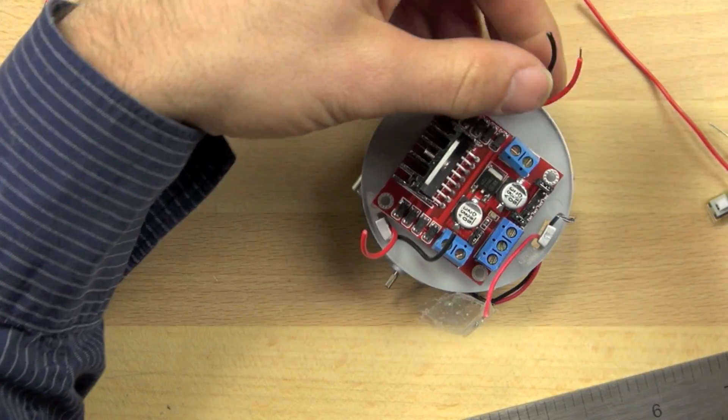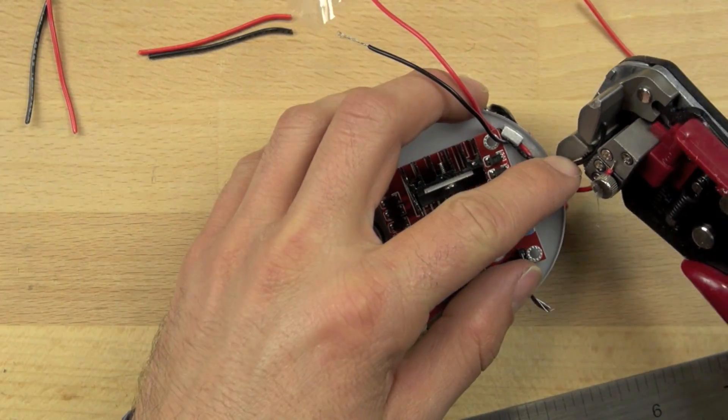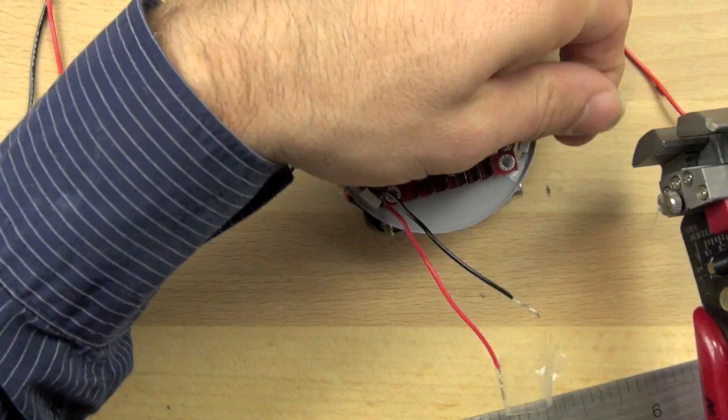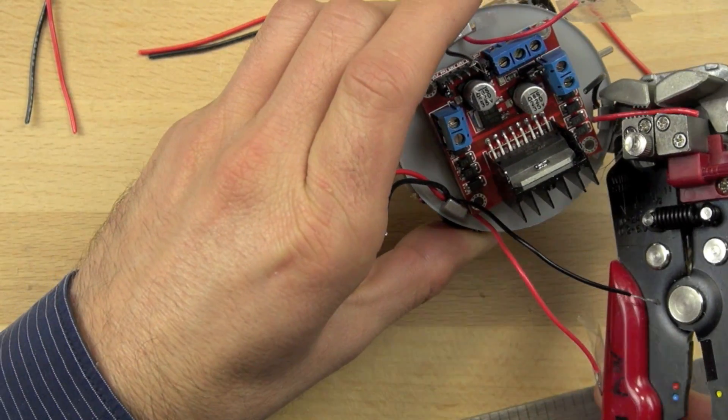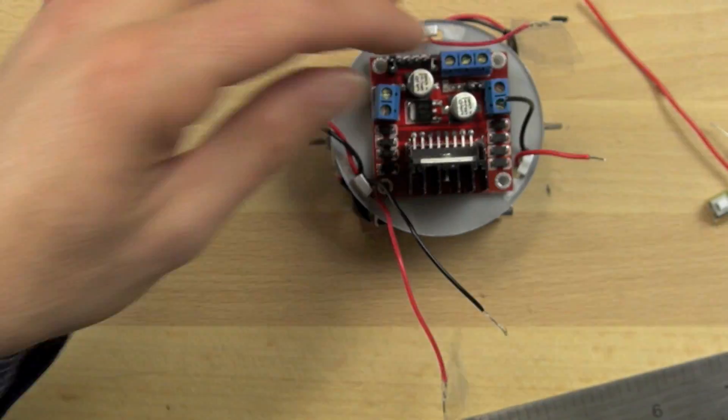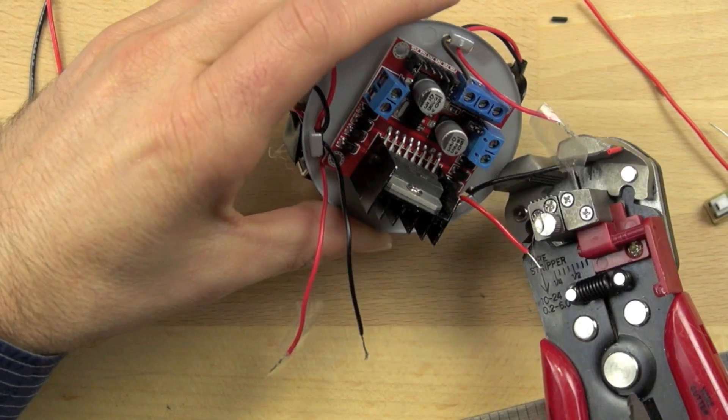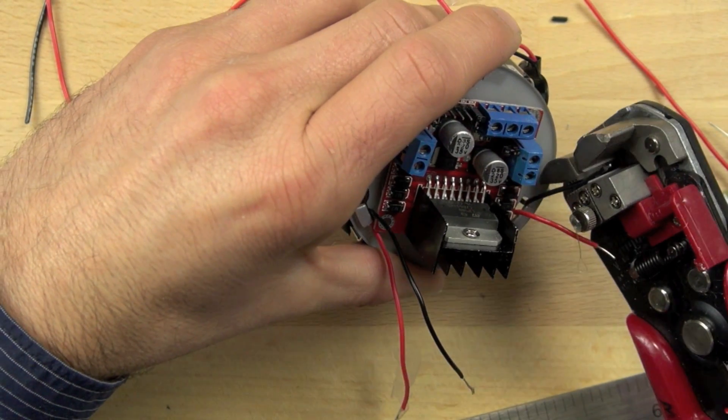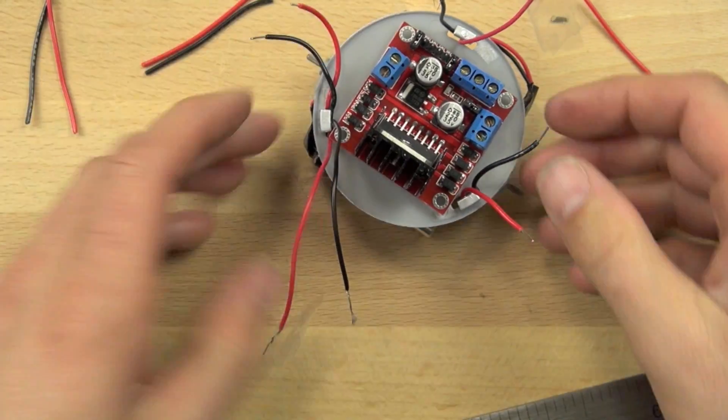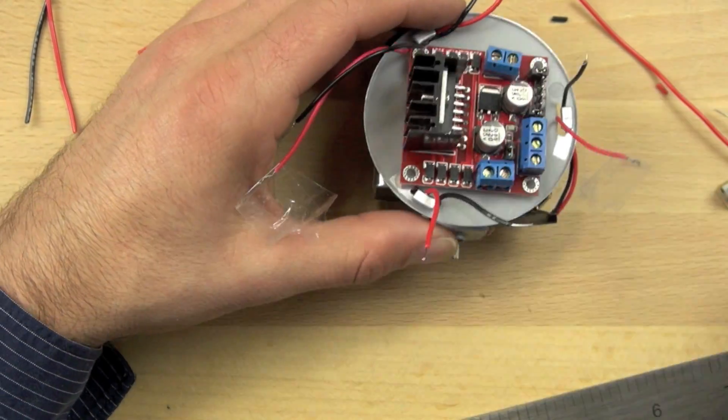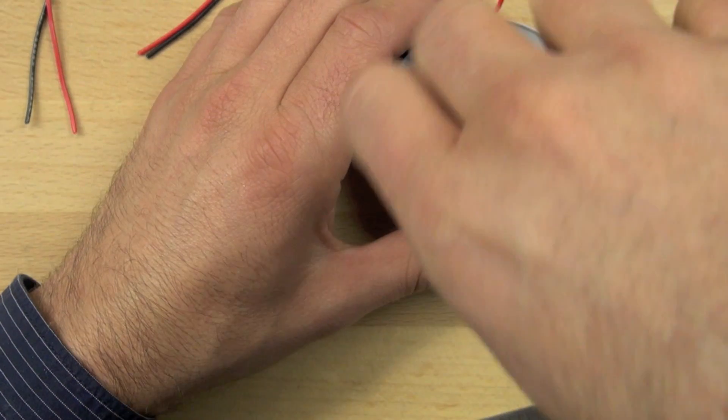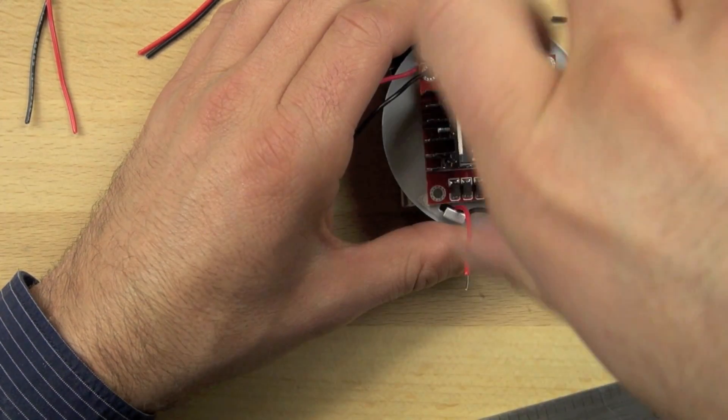And once we've got that insulation stripped off of both wires on both sides, we can go ahead and then start attaching those wires. And you don't need to strip off a whole lot of insulation. It's actually important that you strip off only about an eighth of an inch, just maybe just a little bit more three sixteenths of an inch, because if you have too much exposed wire, the positive and negative terminal could touch and then they won't work. The motors won't work appropriately. You'll get a short.